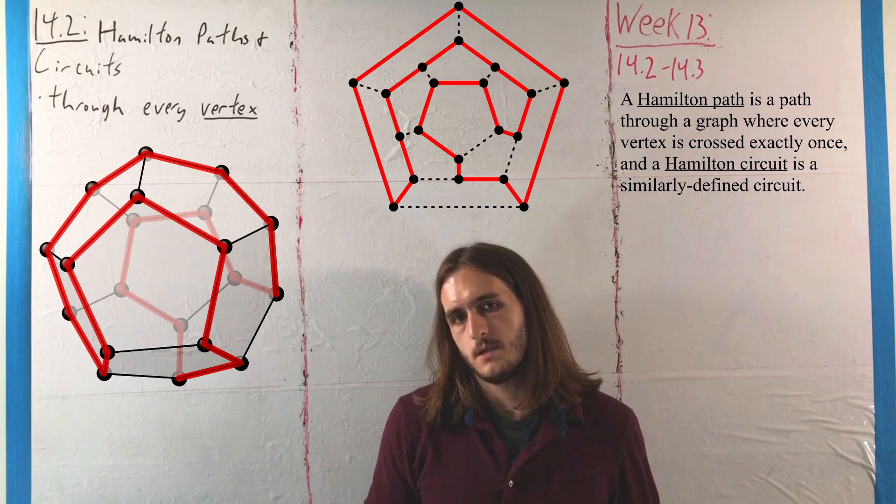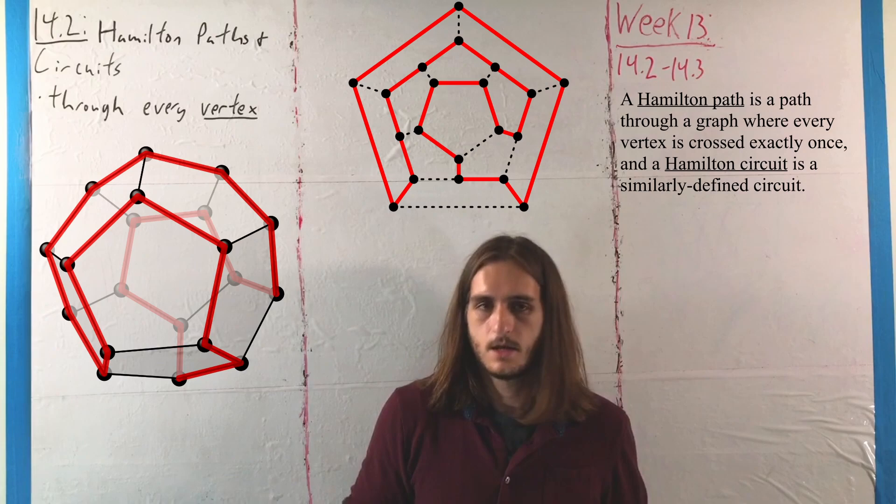But the next thing we're going to see here is some examples for being able to identify a Hamiltonian path or a Hamiltonian circuit in a given graph.